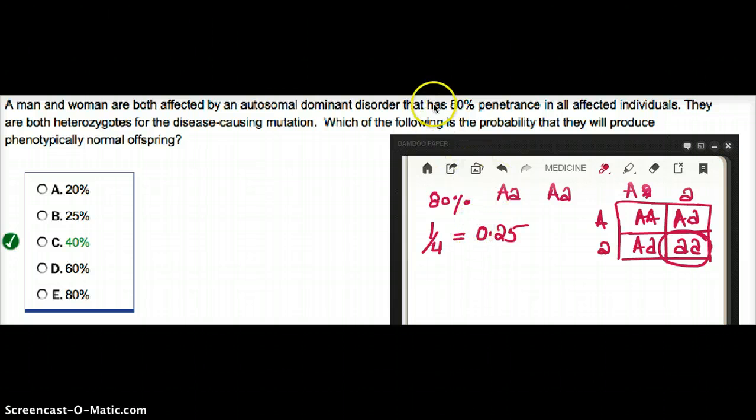But this is not enough because there is a penetrance here and we have to incorporate penetrance into our question. This is going to be the chances of having a normal offspring. Therefore, the chance of having a diseased offspring is going to be 0.75.